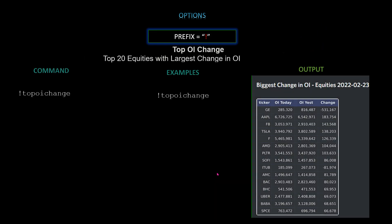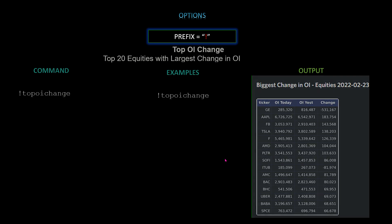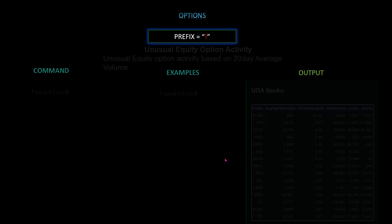Next we have top OI change — the top 20 equities with the largest change in open interest. The command is `!topoichange`. In the output you can see the number one is GE with a negative 531,167 OI change.